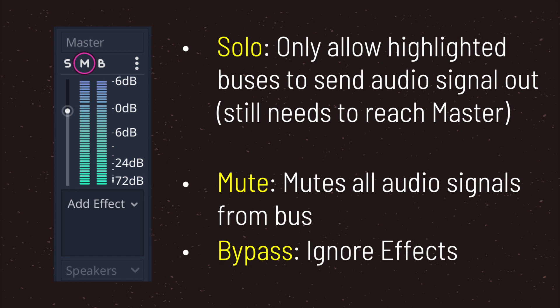The mute button, when active, mutes all audio signals that go through the bus. The bypass button, when active, causes all audio effects to be ignored. The bypass button is great when you want to manually debug the original sounds of audio going through the bus versus the audio signal with added effects.